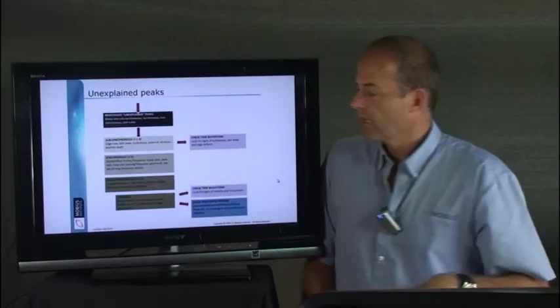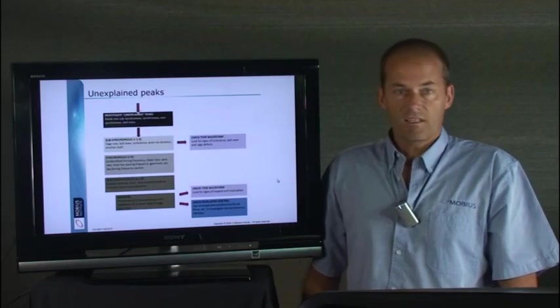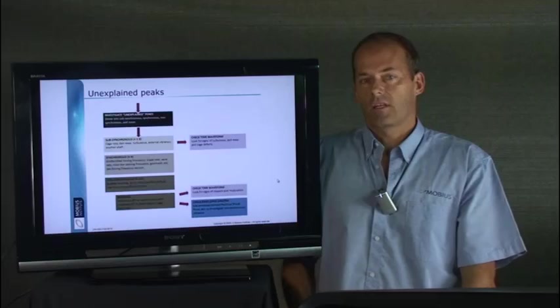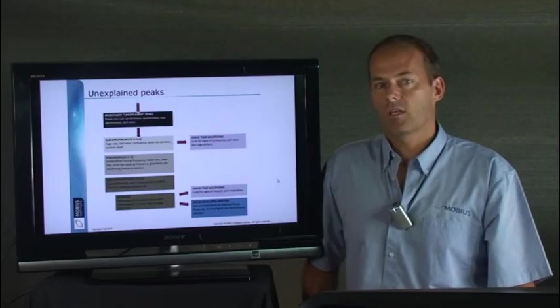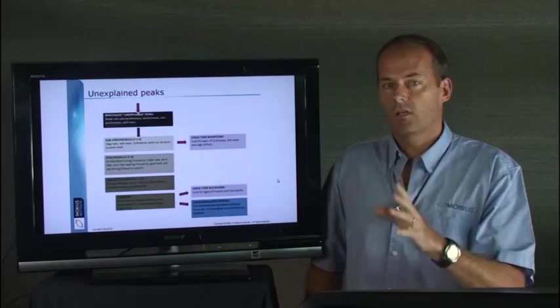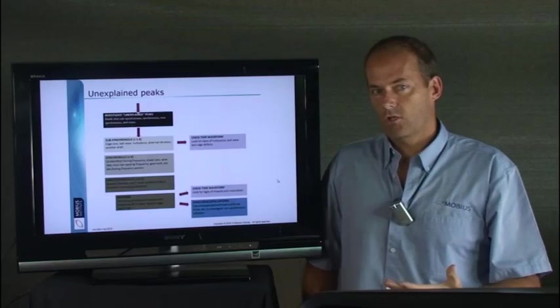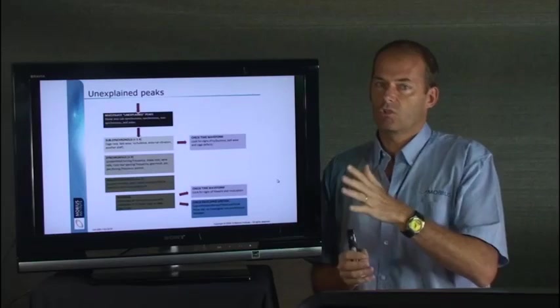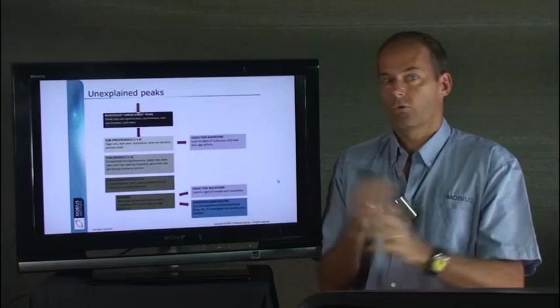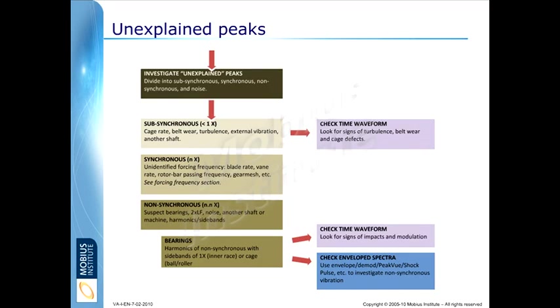But where it gets interesting is with the non-synchronous peaks. Peaks that come up that are non-integer multiples of the running speed. 6.39 times the running speed, 4.03 times the running speed, etc. Not four times, not six times, but 4.09, 6.18. These sorts of ratios. If the machine is more complicated, then you need to make sure that it's non-synchronous with both shafts in the machine, or all three shafts, or whatever it happens to be. But as soon as you see non-synchronous frequencies and you know it's not twice-line frequency and you feel comfortable, it's not one of these sum and difference frequencies or vibration from another machine, then definitely start thinking about bearing faults, rolling element bearing faults, assuming the machine has rolling element bearings.